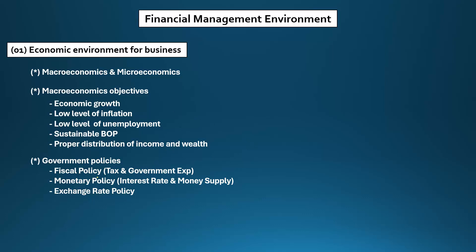Under fiscal policy, the two main instruments are taxation and government expenditure. Under monetary policy, the two main instruments are interest rate and money supply. Under exchange rate policy, the government will use the exchange rate to achieve the macroeconomic objectives.